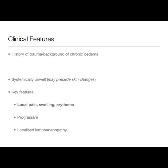Let's now talk about the important clinical features of cellulitis. In the history, there may be a history of trauma, or a background of chronic lower limb edema, fungal nail infection, or any of the risk factors we spoke about. The patient may be systemically unwell with fever, myalgia, malaise, and fatigue, and importantly this feeling may actually precede the skin changes. Key features at the site of infection are local pain, swelling, and erythema. This is usually progressive — cellulitis is a spreading infection that starts at the point of entry and spreads along the dermal and subcutaneous planes. There may also be localised lymphadenopathy, representing an immune response to the infection.